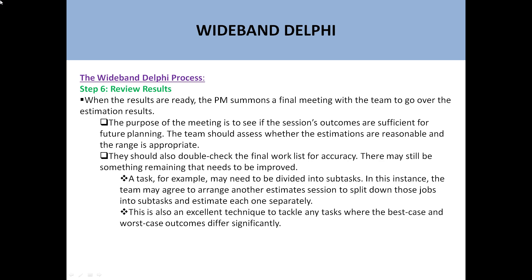Then comes the review of tasks. When the results are ready, the PM summons a final meeting with the team to go over the estimation results. Once results are compiled, the project manager calls another meeting to see if the session's outcomes are sufficient for future planning. The team assesses whether estimations are reasonable, double-checks the final work list for accuracy, and tasks may need to be divided into sub-tasks. This is also an excellent technique to tackle any task where the best case and worst case outcomes differ significantly.